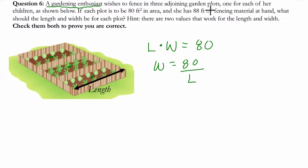And she has 88 feet of fencing material at hand, so that's the perimeter. So the perimeter in this case, let's look at what we have. We have 1, 2, 3, 4 lengths, and then 1, 2, 3, 4, 5, 6 widths.